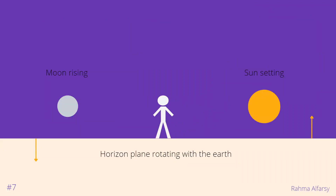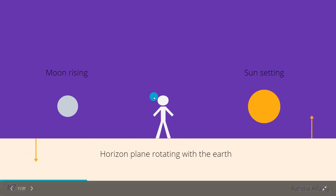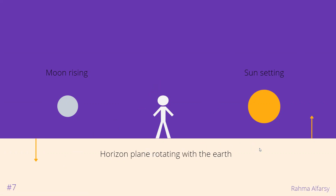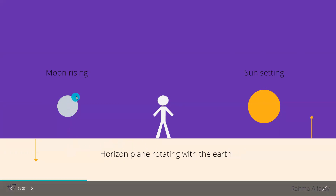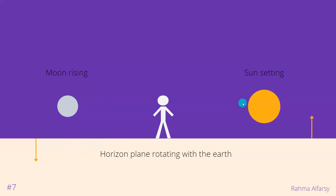The rotation of Earth is responsible for the apparent rising and setting of objects in the sky, such as the sun and moon. Only half of space is visible to an observer on Earth at any one time; the other half is blocked out by the planet beneath us — whatever is below the horizon. The plane that separates the blocked and visible portions of space is called the horizon plane. As the observer rotates with the Earth, so does the horizon plane, and as new objects are swept into view, it appears that they rose from the horizon, like this moon here. Similarly, when objects that were visible cross the horizon plane, they appear to set, like the sun here.